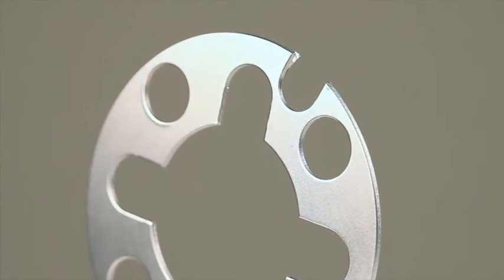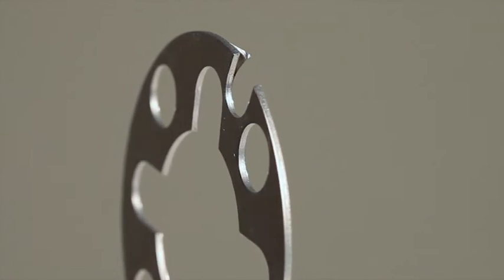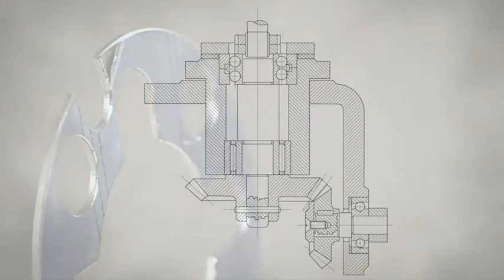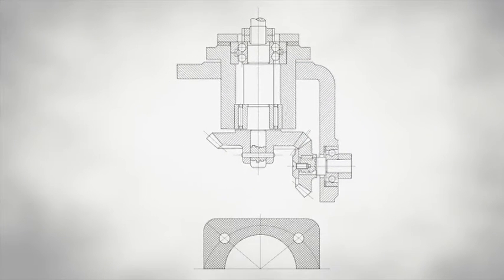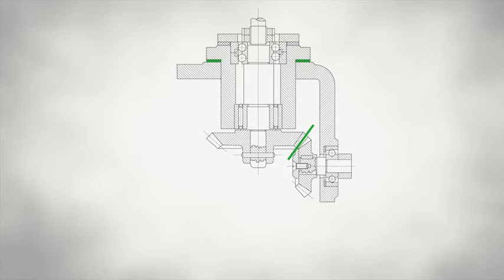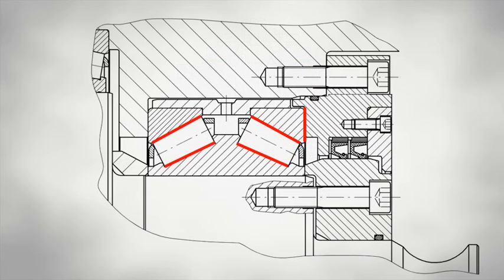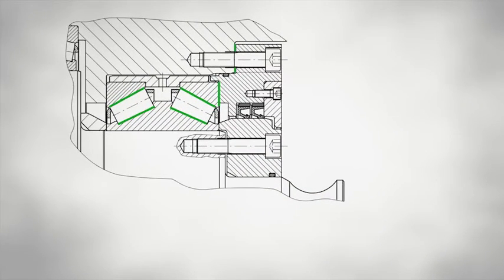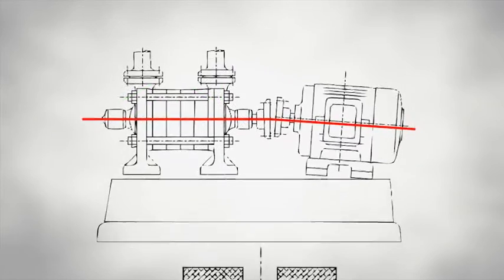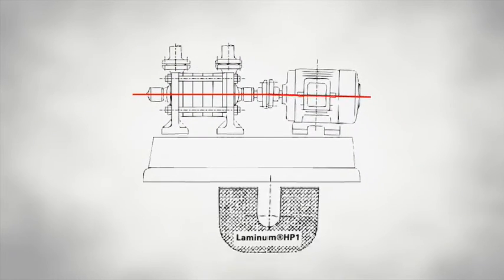Laminum HP one is versatile and comes in standard thicknesses of 0.5 to 3 millimeters. It is perfectly suited for the alignment of transmission components, the adjustment of tapered roller bearings, and compensation of the height difference between motors and pumps.